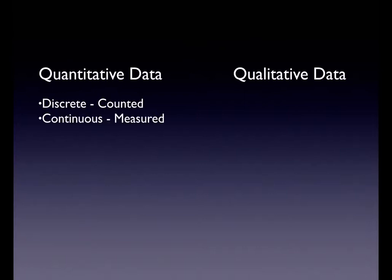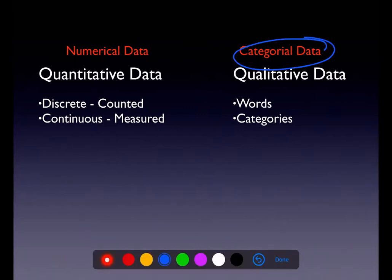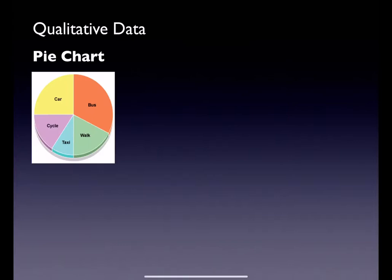Now let's take a look at quantitative data and qualitative data. Quantitative has discrete — which is counted — and continuous, which is measured. Qualitative data means you're giving me words or categories. You've heard me refer to them as numerical and categorical data. Chapter 1 tends to focus on the categorical side, and we'll get to numerical data graphs in Chapter 2.